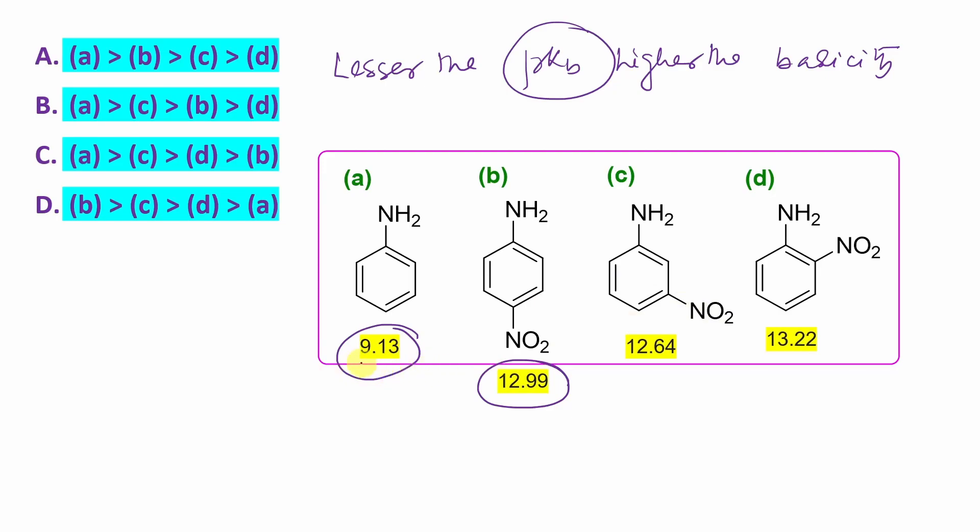Now if you look at lesser the PKB, first least is NH2. Second least is this one meta isomer. So actually A, C, as I told. Then B, 12.99. And last one is actually D. So the option B is the right answer.